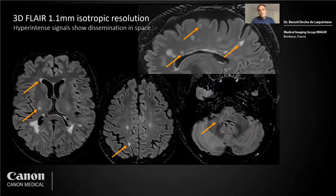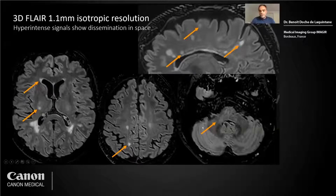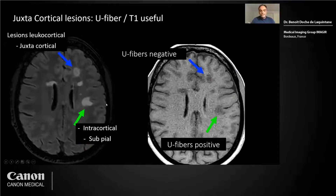The 3D FLAIR is the first sequence — it's isotropic resolution and it's used to see the T2 hyperintense signal to show the dissemination in space. Here you have some periventricular lesions, some juxtacortical lesions, and some infratentorial and juxtacortical lesions. That's the dissemination in space; another topic is the spine for the dissemination in space.